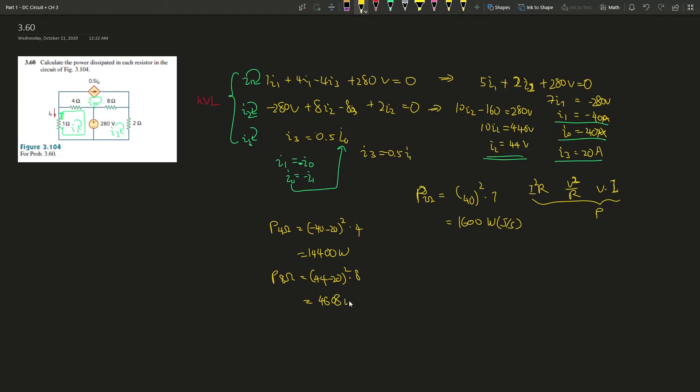Last but not least, power at 2 ohms resistor is 44 amperes squared times 2 ohms, which is 44 squared times 2. That is going to give us 3872 watts.